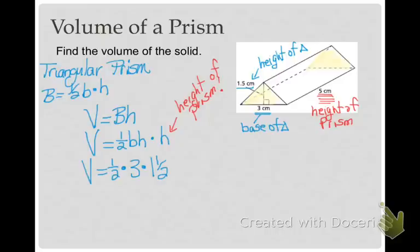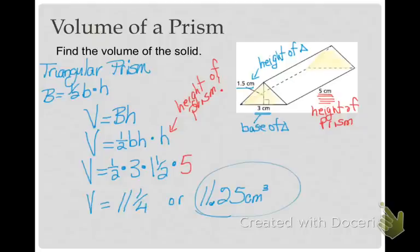So we're going to say one half times the base, which is three, times one and a half, which is the height of the triangle. And then we're going to multiply it by five, which is the height of the prism. Put that all in our calculator, and we're going to get 11 and 1 fourth or 11.25 centimeters cubed. Be careful with the cubed and read carefully how they want you to answer it in Math Excel, whether as a fraction or a decimal.